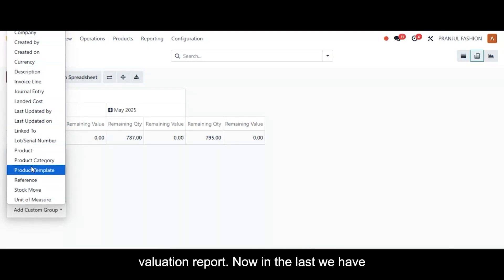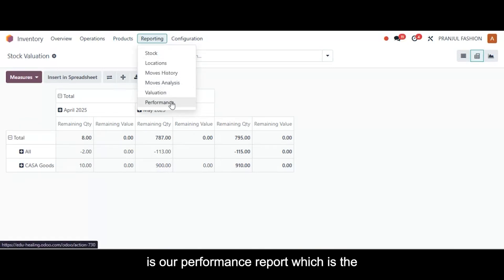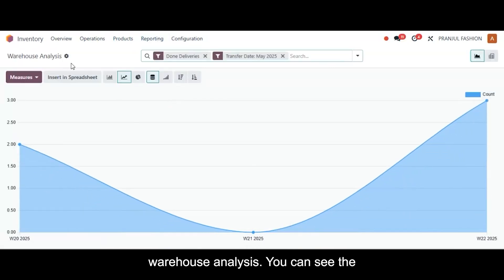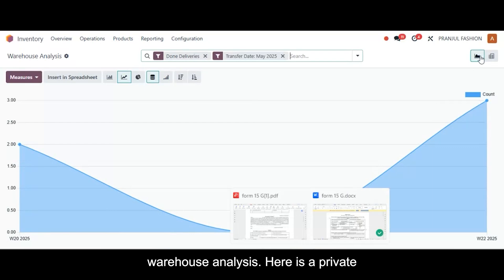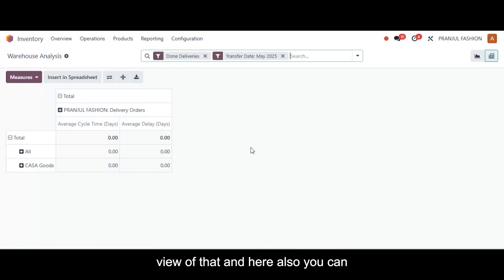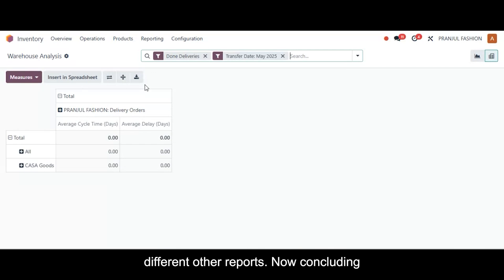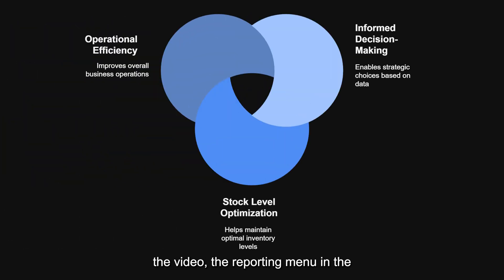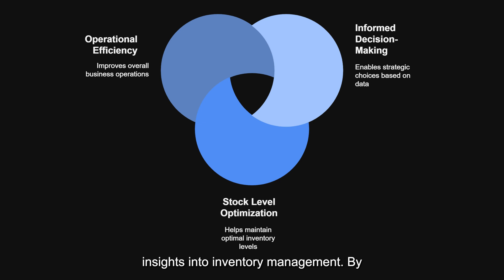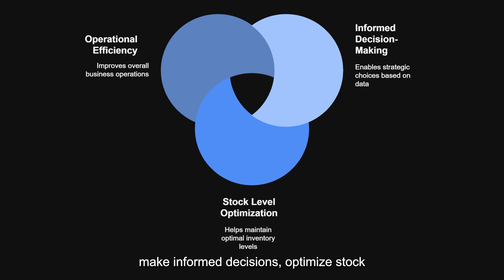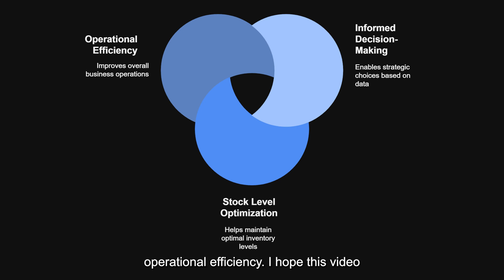In the last section we have the warehouse analysis performance report. You can see the pivot view here, and it offers the same options available in the other reports. Concluding the video, the reporting menu in the inventory module of Odoo offers a wide range of reports that provide valuable insights into inventory management. By utilizing these reports, businesses can make informed decisions, optimize stock levels, and enhance overall operational efficiency. I hope this video was insightful — stay tuned for our next videos.